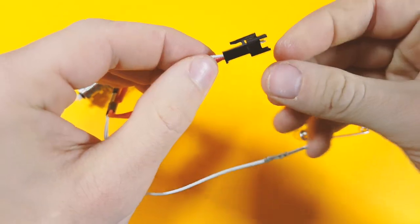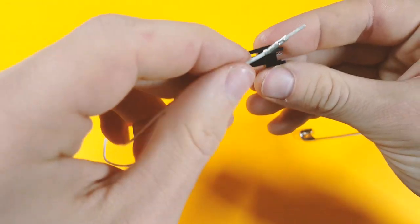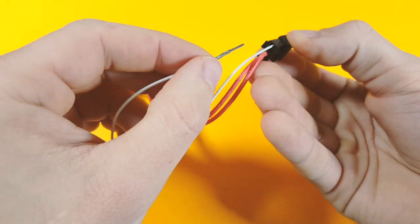Taking apart the male section of the JST-SM style connector is just difficult. There's no sugar coating it.